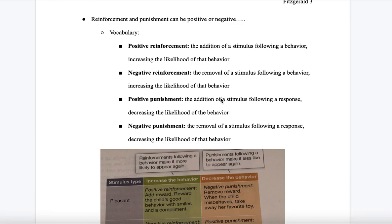The final subsection covers reinforcement and punishment, and how they can be positive or negative. Positive reinforcement is the addition of a stimulus following a behavior, which increases the likelihood of that behavior. Negative reinforcement is the removal of a stimulus following a behavior, which also increases the likelihood of that behavior. Positive punishment is the addition of a stimulus following a response that decreases the likelihood of that behavior — for example, punishment for doing something wrong, like spanking.